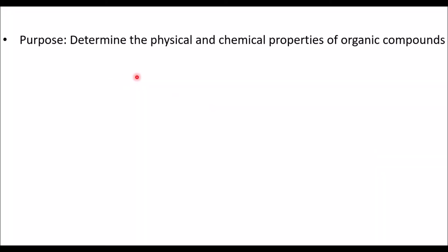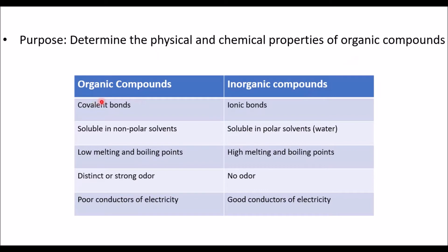The purpose of this lab is to determine the physical and chemical properties of organic compounds. The majority of organic compounds are made of carbon and hydrogen, and a few contain nitrogen, oxygen, phosphorus, and sulfur along with carbon and hydrogen. We can use the mnemonic CHENAPS to represent the elements of organic compounds.